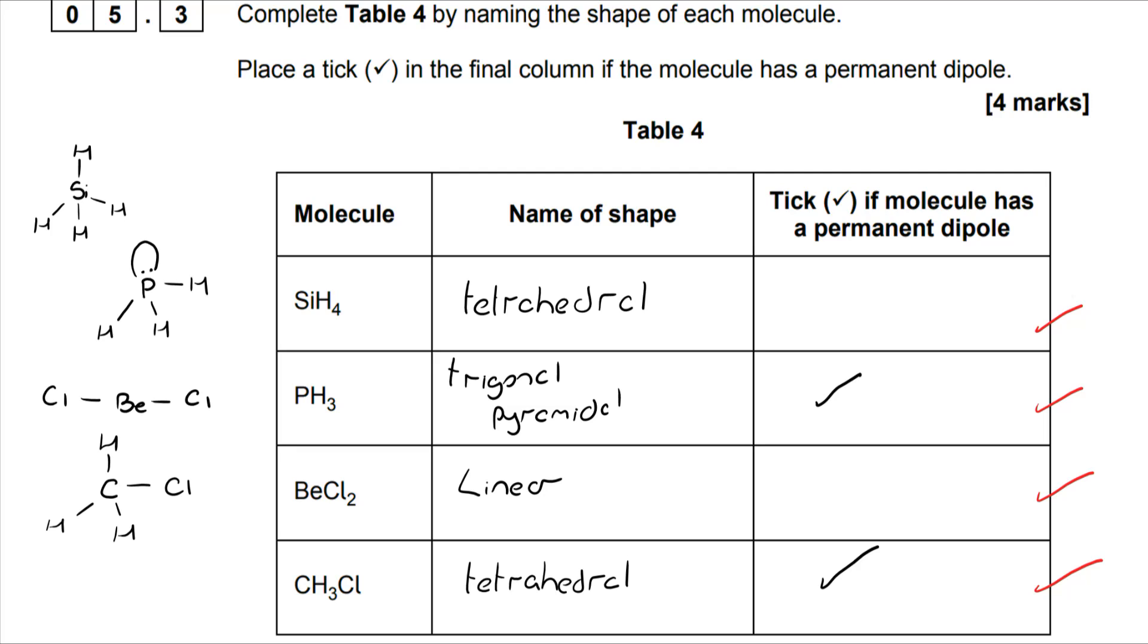SiH4 and BeCl2 do not have a permanent dipole, and it's down to the symmetry. If you think about the SiH4, all of the Hs are pulling equally on the central silicon. So we don't end up with that dipole being formed, similarly with BeCl2.